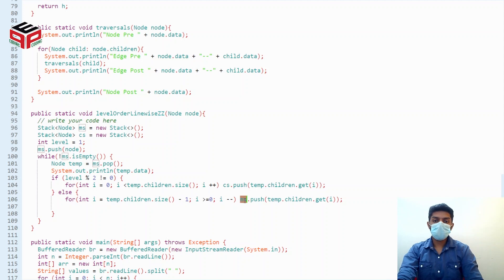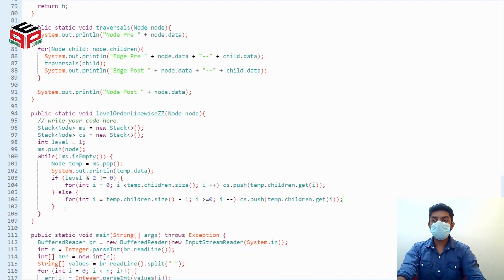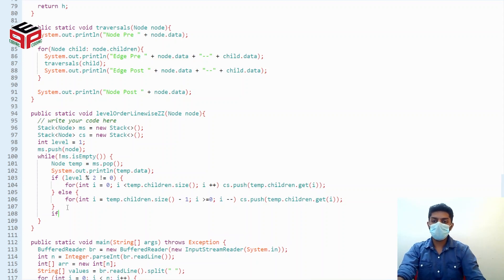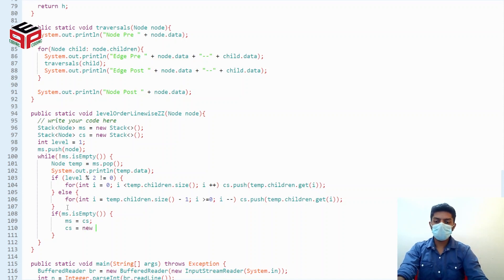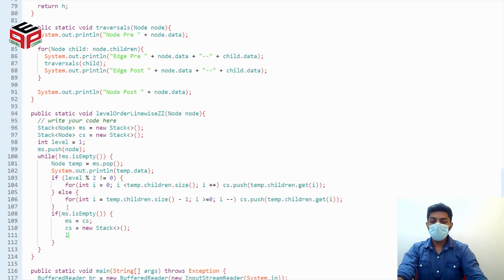If by any chance my main stack becomes empty, if ms.is_empty, what do I do is firstly I make ms to cs, cs becomes new stack, and level gets incremented, and we move to the next line.